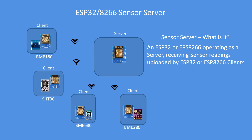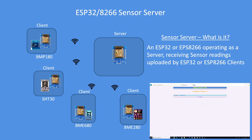The server is the centre of the activity, again based on an ESP32 or an 8266, listening for clients transmitting data. When received, it displays the results on a web page. The clients could be a number of sensors or it could be just text. There is an example in the bottom right of the server waiting for results, and you can see immediately the results are displayed.